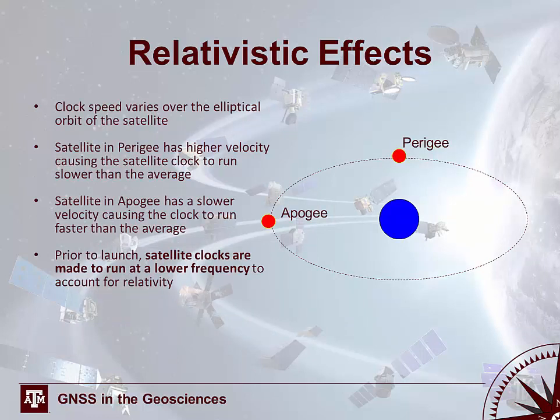Clock speed varies over the elliptic orbit of the satellite. At perigee, the satellite has higher velocity, causing the satellite clock to run slower than average. Conversely, at apogee — the farthest point — the satellite travels at a slower velocity, causing the clock to run faster than average. To account for relativistic effects, all satellites prior to launch are made to run at a lower frequency, compensating for these relativistic effects.